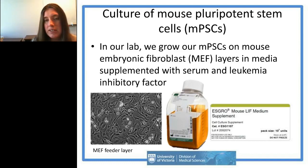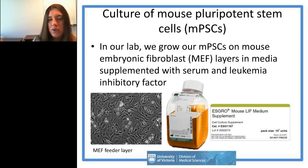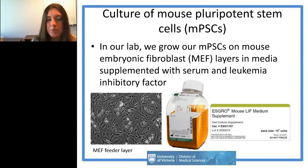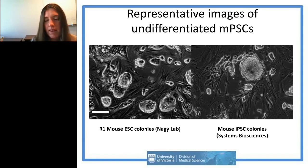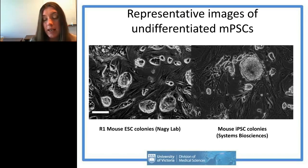When culturing mouse pluripotent stem cells, we supplement with LIF to activate the pluripotency pathway and grow them on feeder layers consisting of mouse embryonic fibroblasts, which secrete factors that enable these cells to maintain pluripotency. The media is also supplemented with serum, which is not always used with human cells. For these studies, our mouse ESC line is the R1 line — a very standard line obtained from the Nagy lab in Toronto.